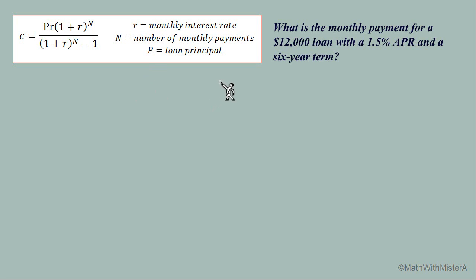First we're going to determine what numbers we need to put in place of these variables. P equals the loan principal and that is our $12,000 amount of the loan. Capital N is the number of monthly payments. Now notice that we have that it's a six-year term but N must stand for the number of monthly payments. So this six-year term would be six years times 12 months per year, so we have a total of 72 months.